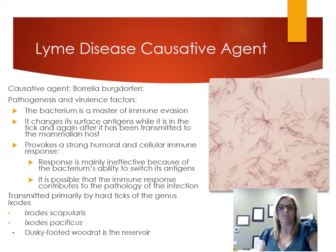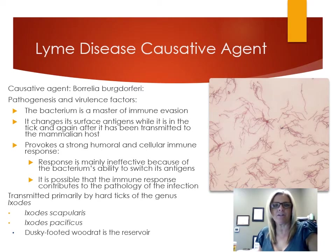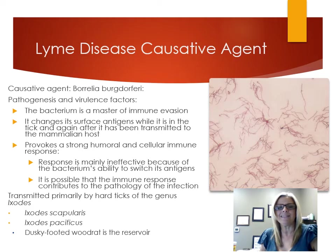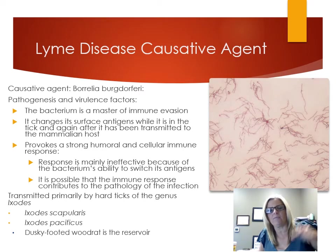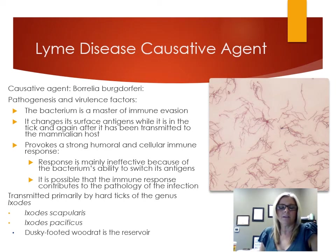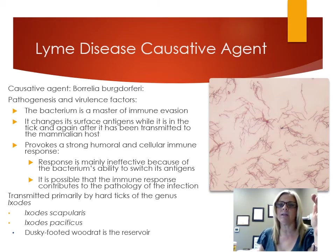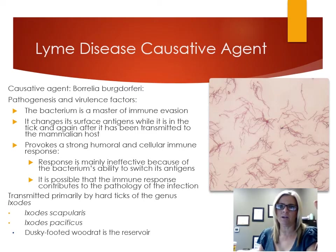Lyme disease is caused by Borrelia burgdorferi, a gram-negative spirochete transmitted by the Ixodes scapularis, or black-legged deer tick, particularly in the Northeast. This bacterium is a master of evading the immune system through antigenic shift — it changes its antigens while in the tick and again after being transmitted to the human host. Although the host mounts a strong cellular and humoral immune response, it is largely ineffective because the bacterium swaps its antigens, contributing to the pathogenicity of the infection.